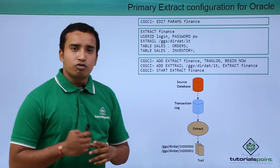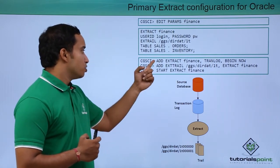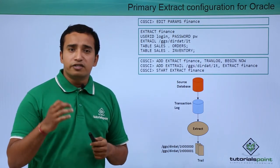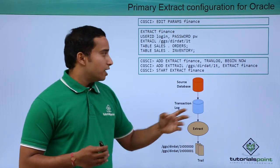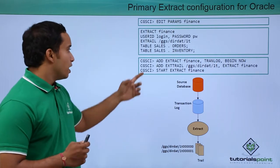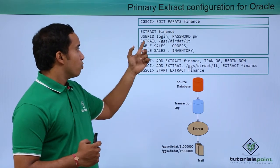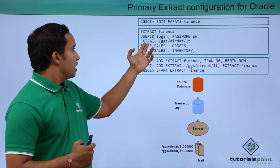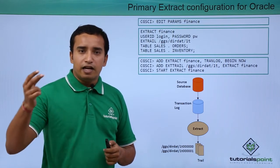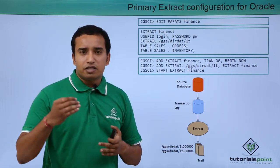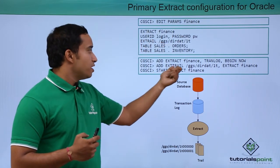Once the extract is configured, you register it using: 'add extract <extract_name> tranlog begin now'. This registers your extract and starts capturing the data immediately from the transaction logs. Then you register your trail file using 'add exttrail'. Whatever trail file location you specified in the parameter file — for example, GGS_DIR/DAT/1T — you register it here. The '1T' is the starting name of the trail file, and it will be appended with a sequence number (1, 2, 3) in increasing order.